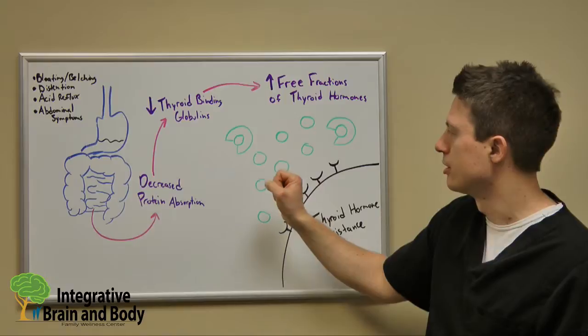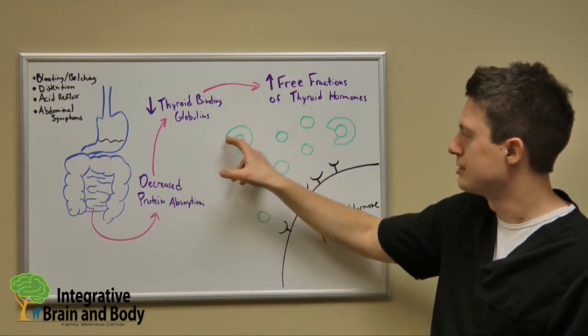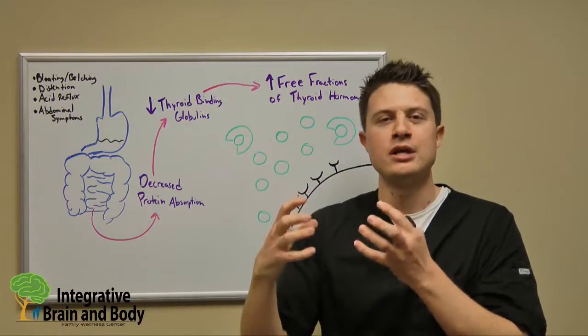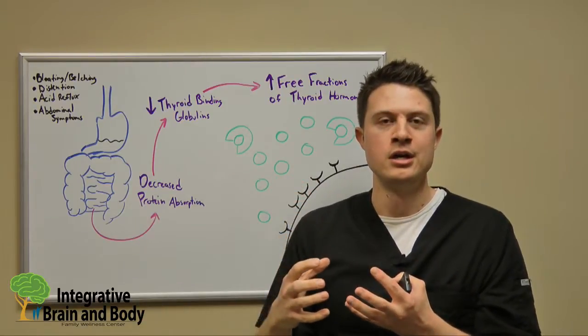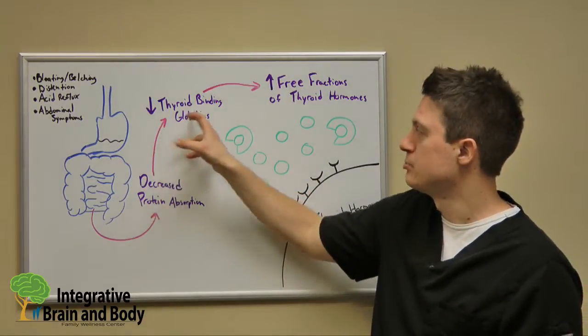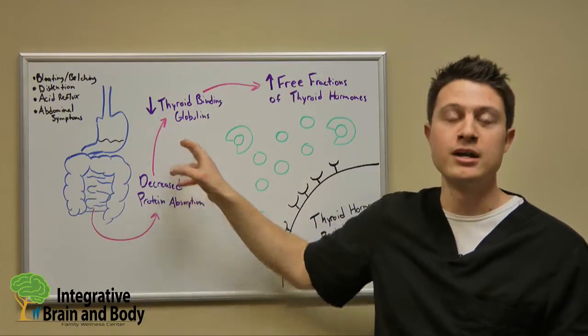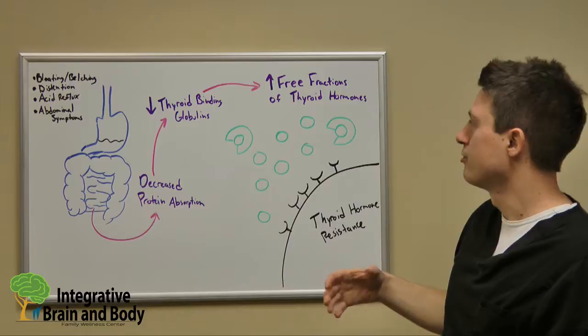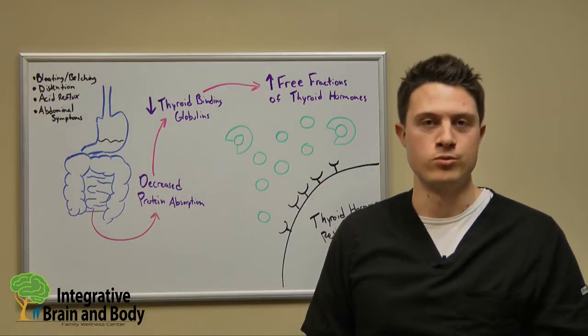In this picture here, the ones that have these little C shapes on them, those are the ones that are bound up to proteins, and these can't really enter the cell. So if we have a decrease in these binding proteins or these binding globulins, that means we'll have an increase in the free fractions of hormones or thyroid hormone.